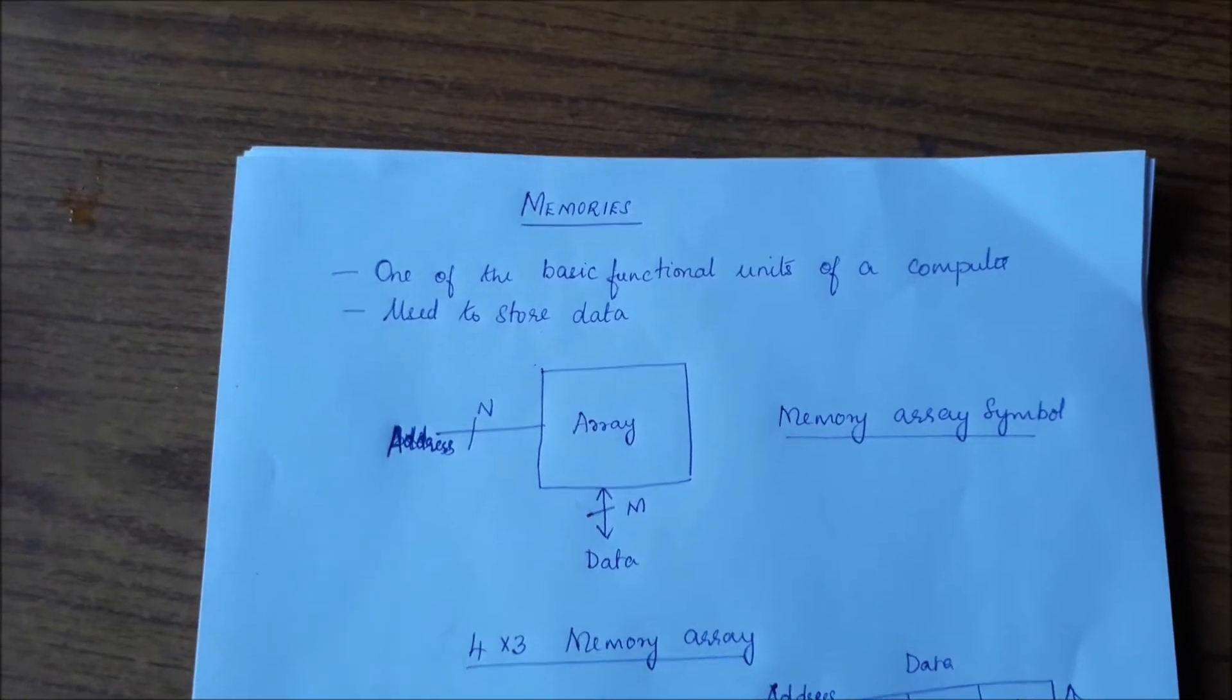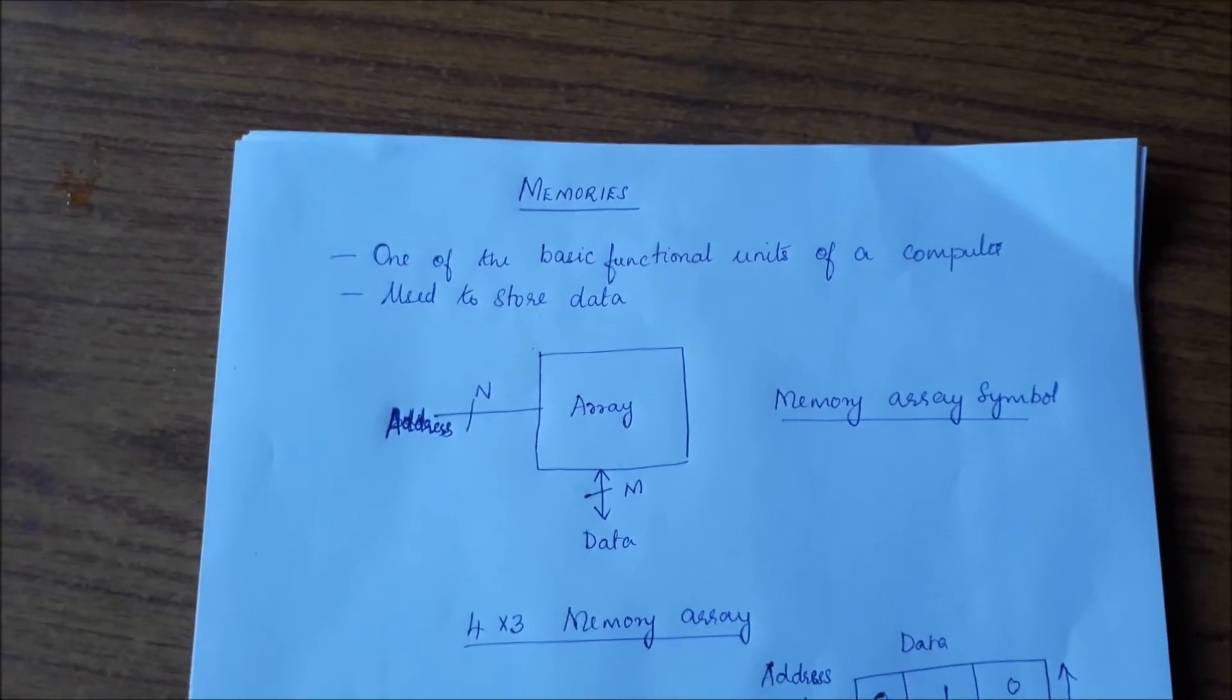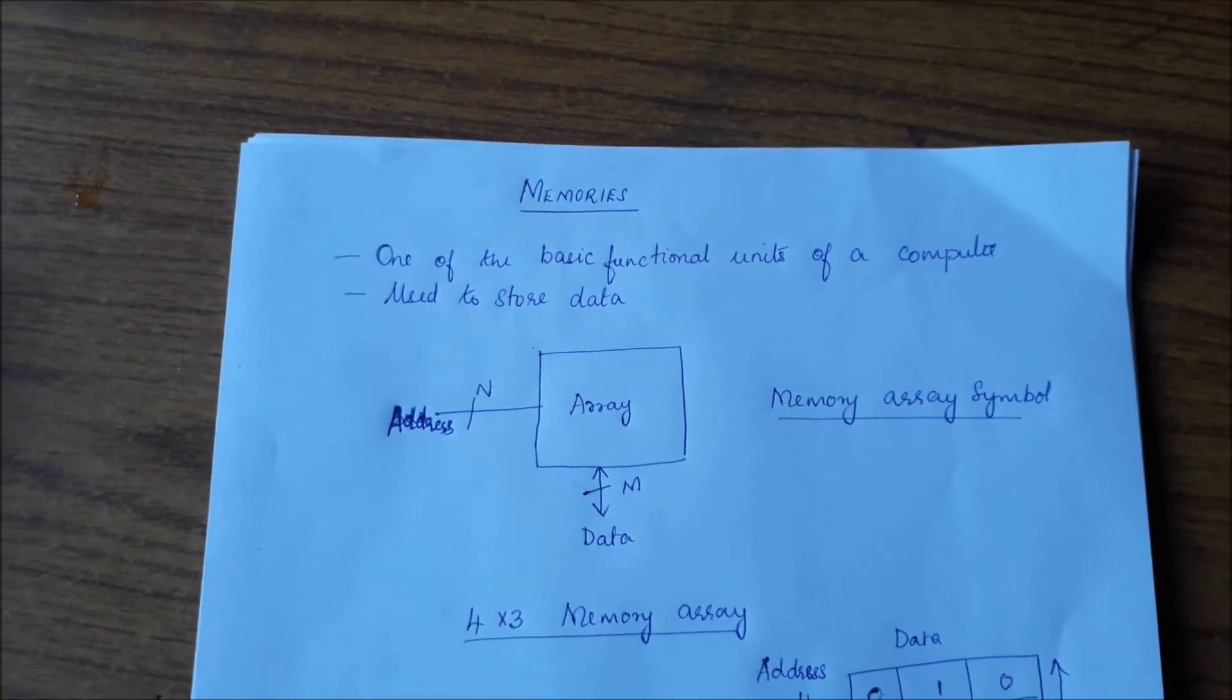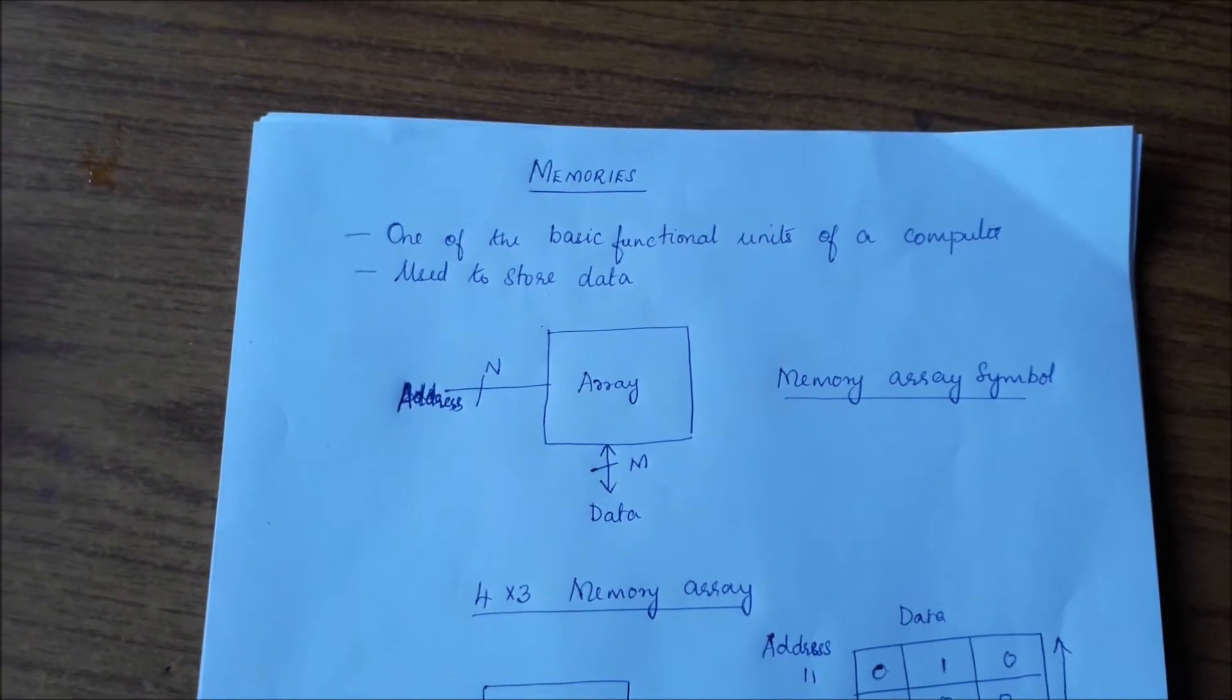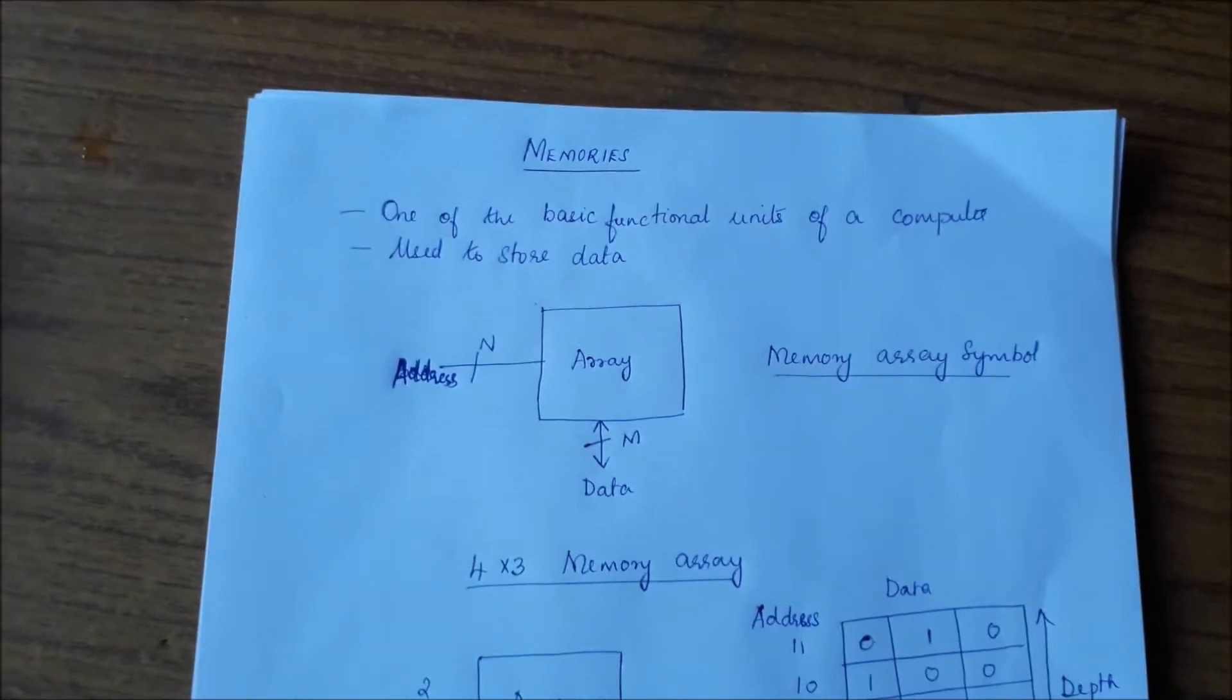There are various ways in which memories are made, which will be dealt with in remaining classes. Now let us look at the generic or a general memory. A general memory is organized as follows.